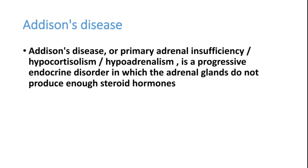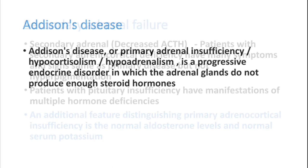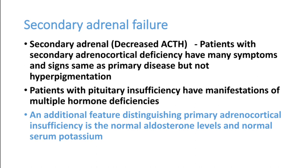Addison's disease, or primary adrenal deficiency, is also called hypocortisolism or hypoadrenalism. It is a progressive endocrine disorder where the adrenal gland does not produce sufficient steroids, so ACTH levels rise trying to stimulate more production. Patients with secondary adrenal insufficiency can have similar symptoms but without hyperpigmentation, since that is driven by elevated ACTH. An important distinction is that secondary insufficiency shows normal aldosterone levels and normal serum potassium. Patients with pituitary insufficiency may also have deficiencies of other hormones.